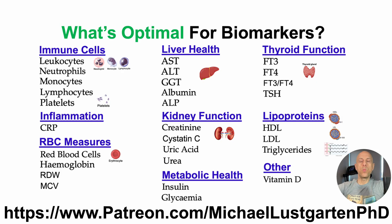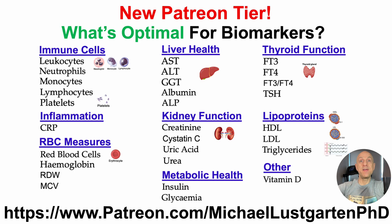If you've ever wondered what's optimal for biomarkers, I have a new Patreon tier dedicated just to that. This isn't a focus on the reference range — this is what may be optimal based on how each of these 29 biomarkers changes during aging and their association with all-cause mortality risk. It currently includes more than two hours of video content, and I'm planning on expanding it with another three biomarkers coming very soon from 45 published references.